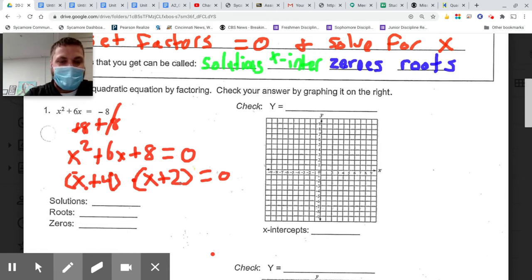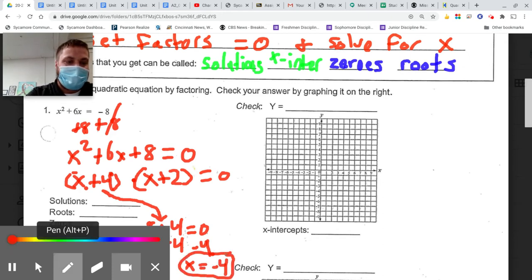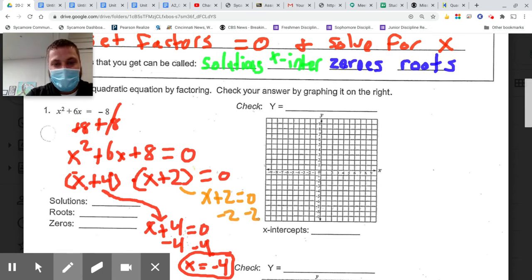So now that would be factored. If the directions said factor, I would stop, except the directions say solve by factoring. So now I use what's called the zero product property. What makes this quadratic equal zero are the two numbers that make these factors equal zero. So I take x plus four and set it equal to zero to get my first answer, which is x equals negative four. Then I take my other factor, x plus two, and set it equal to zero and get x equals negative two. So my solutions are x equals negative four, x equals negative two. My roots are the same, my zeros are the same. These words are all synonyms.